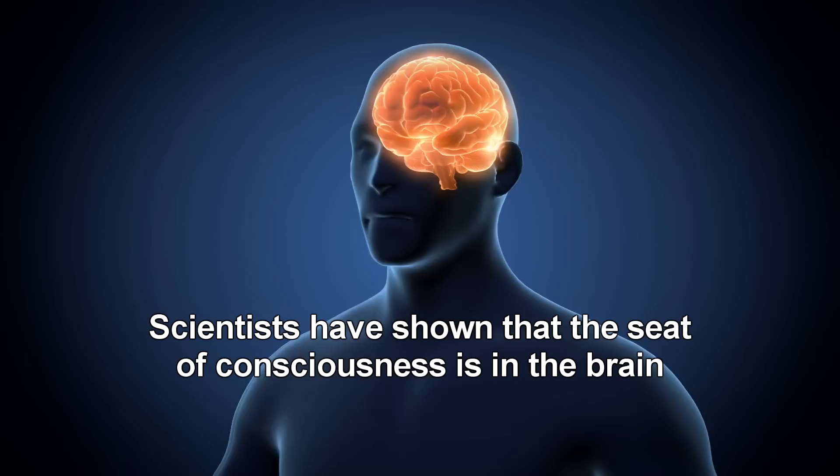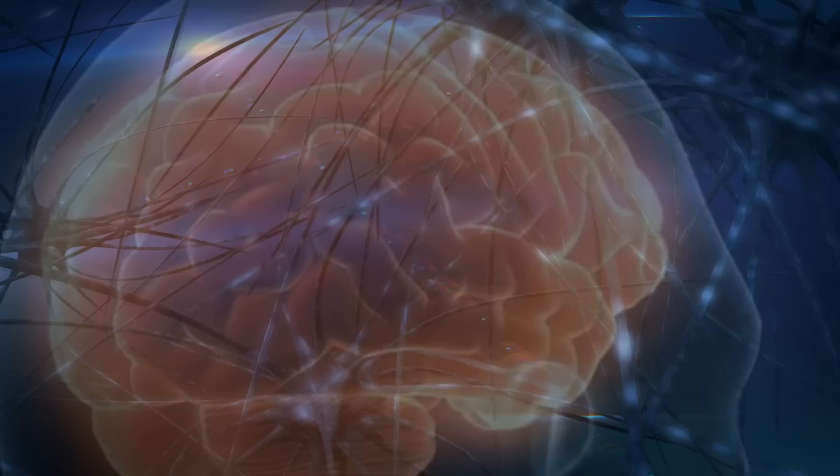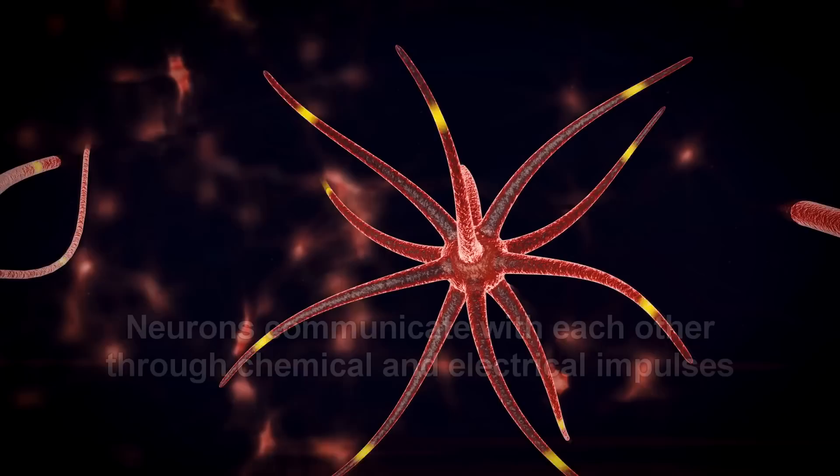Scientists have good evidence that the seed of consciousness resides in brains. Consciousness seems to be an emergent property of highly interconnected and communicating systems, like the brain, which is an interconnected network of neurons. What are neurons? They are triggered by certain stimuli and can send signals to each other. Large, complex networks of these neurons seem to emerge into consciousness.